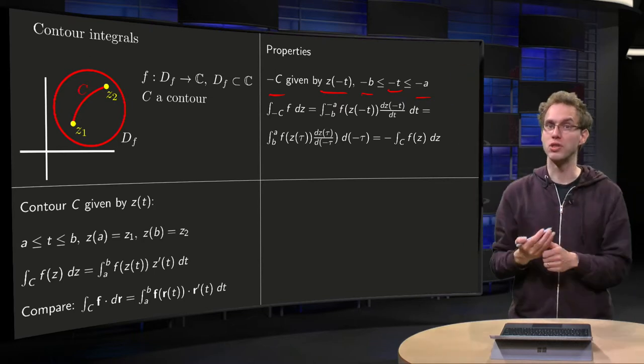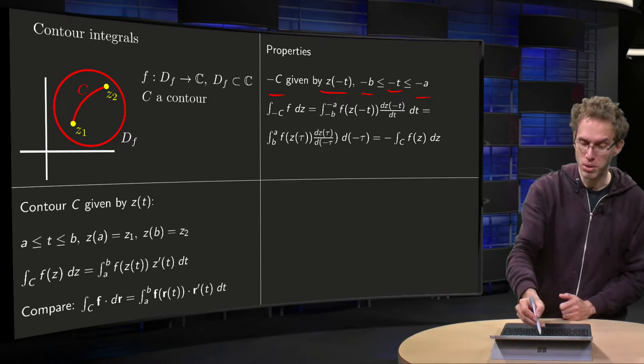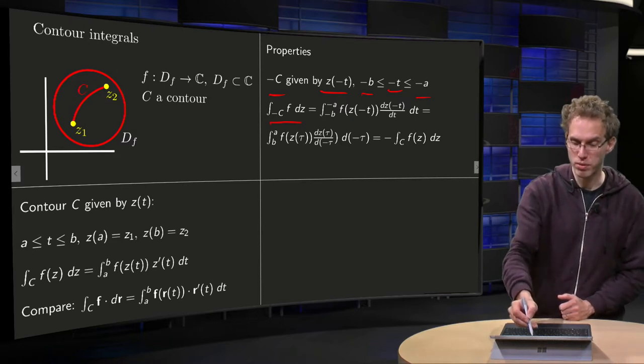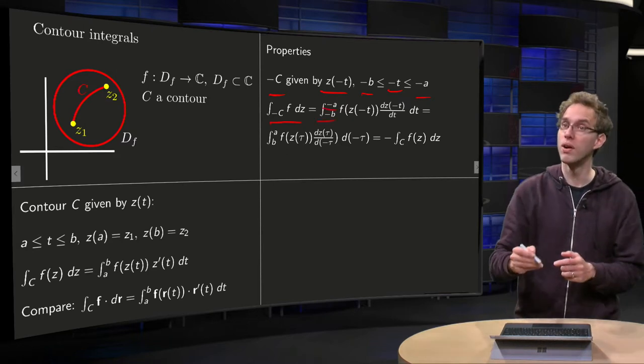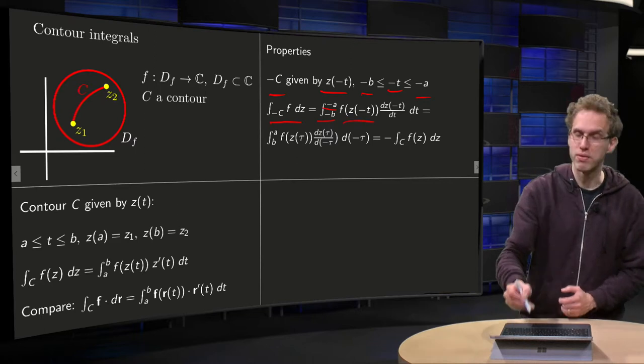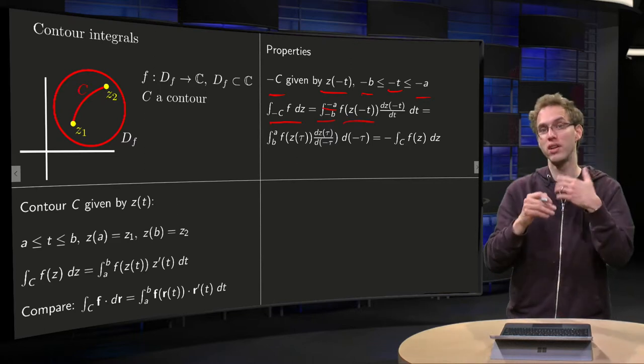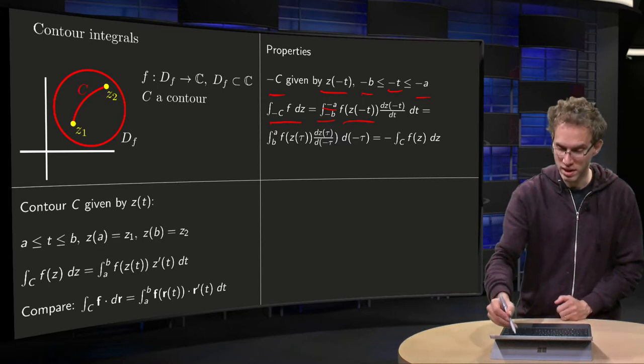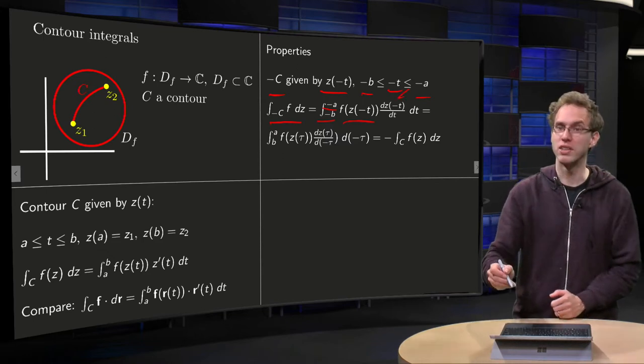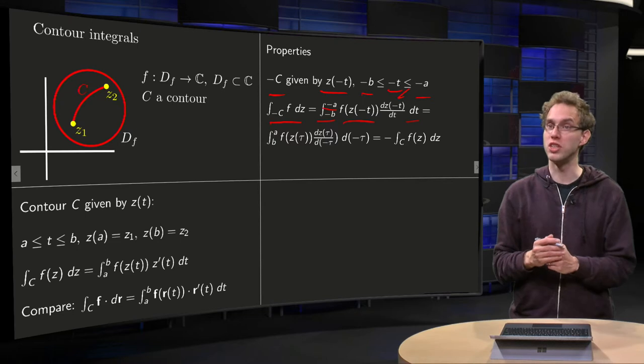So what happens to your integral? Integral along minus C, well you run from minus B to minus A now. Your f becomes f of z of minus T instead of f of z of T. Here you have the d by dT of z of minus T, you integrate with respect to T.